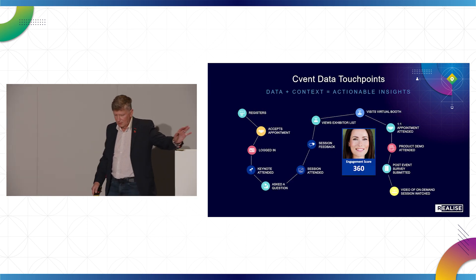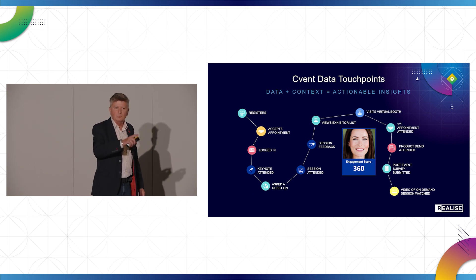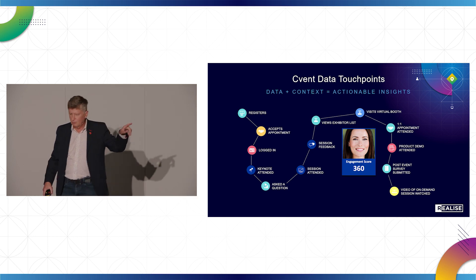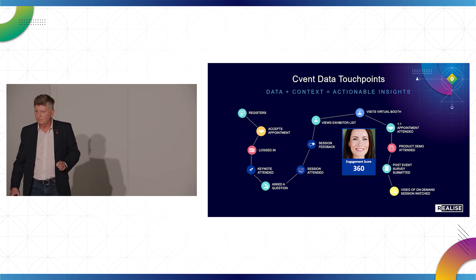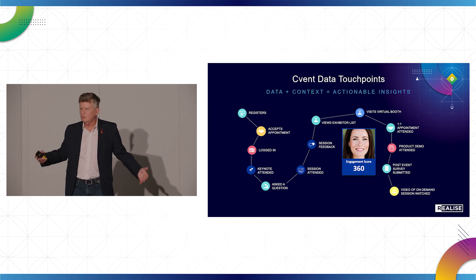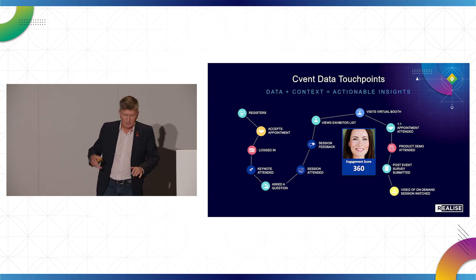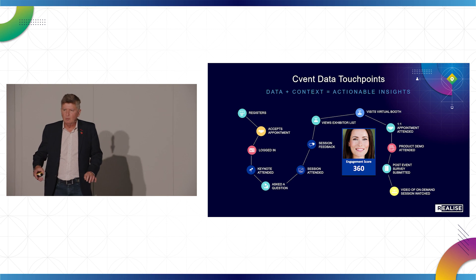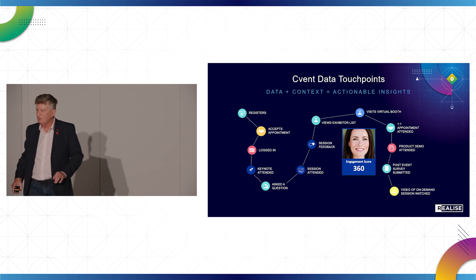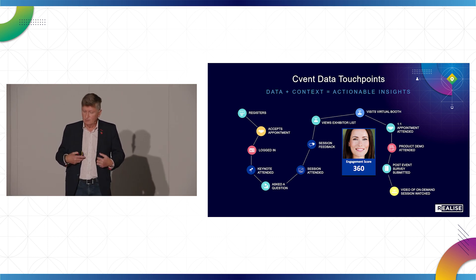There's a chart showing all the different points where you can gather data — what they call an engagement score. The engagement score is just an indicator; it has no real context. I might get one point or ten points because I registered online, or a few points because I accepted some appointments. It gives a score of how much I've interacted with the platform, but it doesn't give me any context as to what I want as an individual going forward.